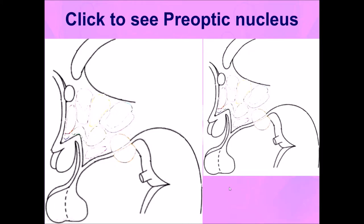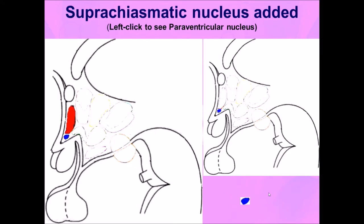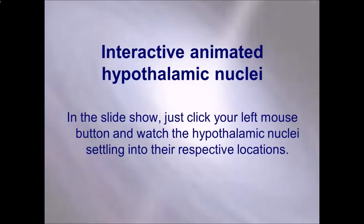Now he wants to see the pre-optic nucleus. He clicks on it and it appears in front of him. Then he wants to see the suprachiasmatic nucleus — he clicks and it appears. Now he wants to see the paraventricular nucleus, and it appears in front of him. He can keep clicking and one by one the nuclei will appear.